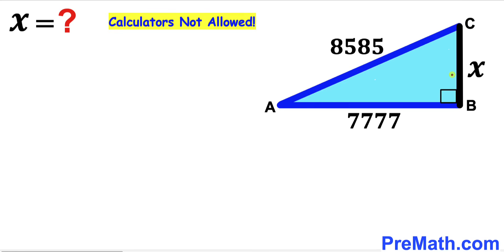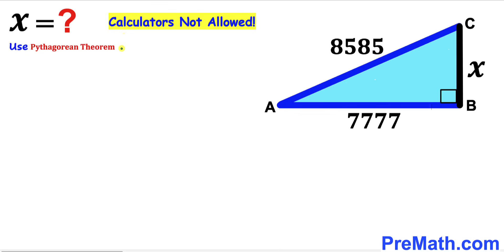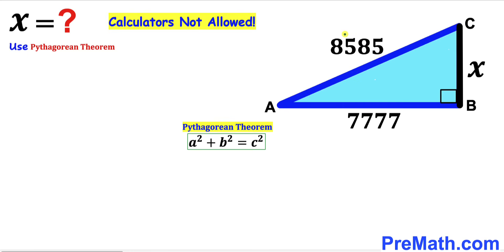Let's focus on triangle ABC. Since this is a right triangle, we are going to apply the Pythagorean theorem: A² + B² = C². In our case, our hypotenuse is 8585, whereas our two other legs are X and 7777.